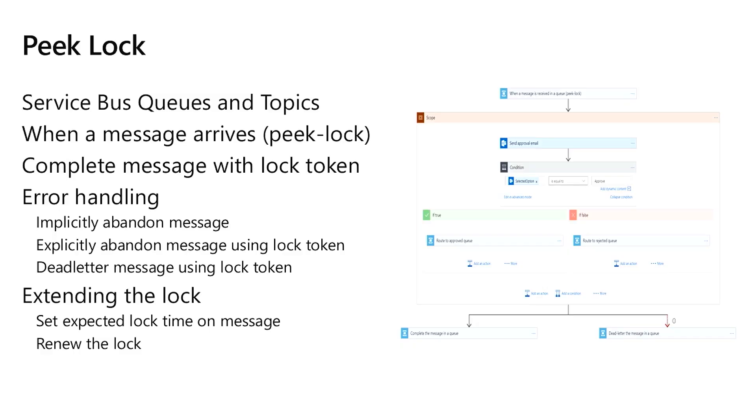If everything goes well, you complete the message. If something goes wrong, you can abandon it or put it in a dead-letter queue. If you have long processing before completing, you can extend the lock timeout — there's a default timeout in service bus of a few minutes, but you can extend that lock to keep the message alive so it doesn't get automatically abandoned.